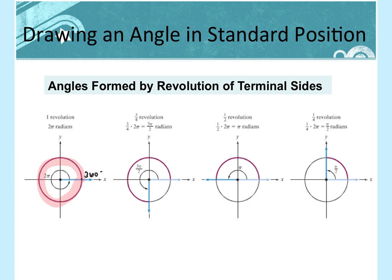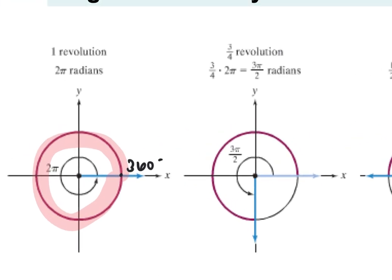In a unit circle — one with a radius of one — that same measurement is circumference. Circumference is 2πr, so if r is 1, the circumference is 2π. All the way around in degrees is 360; all the way around in radians is 2π.